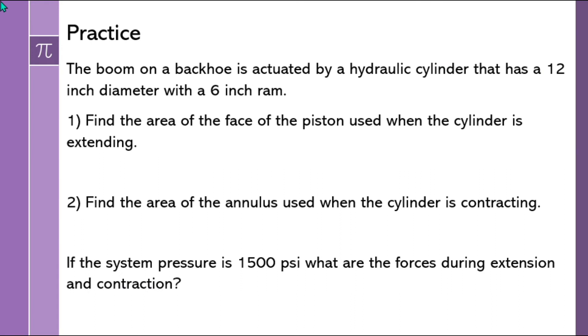Do a little more practice before we do the last topic here. We've got a backhoe with a hydraulic cylinder, and it's got this kind of situation going where the cylinder has a 12-inch diameter and it has a ram or a rod with a 6-inch diameter. So we're going to find the area of the face of the piston when the cylinder is extending. Remember that when you were extending, you were acting on this side. So you get that full area. So it's very straightforward. Area equals pi r squared. So we're going to take pi, multiply it by the bore, the cylinder bore, divided by 2 to get a radius. And we're going to get 113.04 cubic inches.